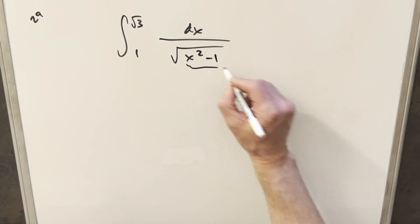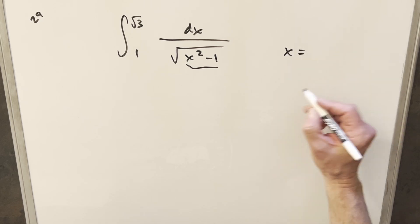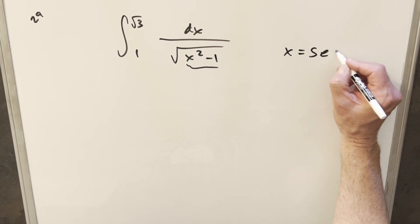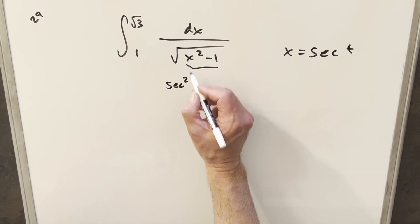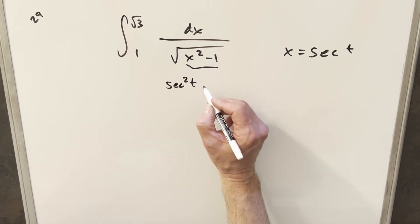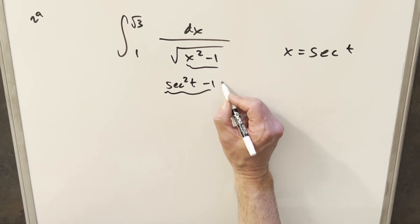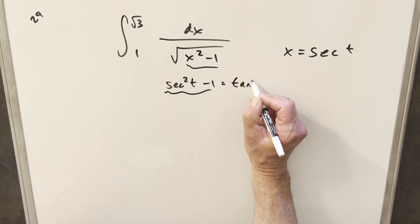So what I want to do for this with it in this form here is let's just do a substitution for x equals secant t. The reason that's going to work pretty nice is because if we plug in secant here, when you have secant squared t minus 1, we have an identity that this is the same thing as tan squared of t.